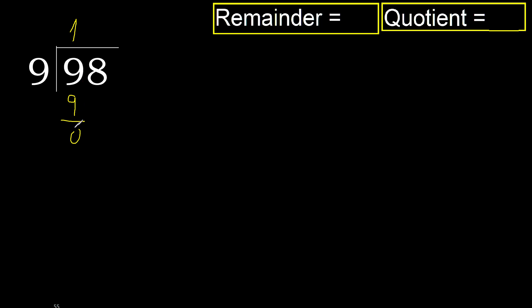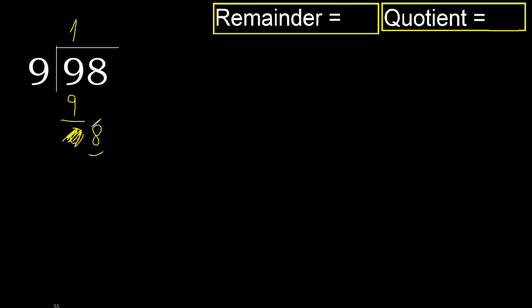Subtract 0. Next, bring down. Eliminate 0 on this side. 8 is less, therefore next. There is no number, therefore finish it.